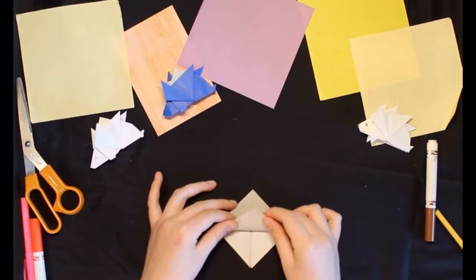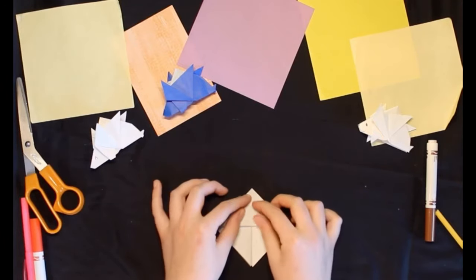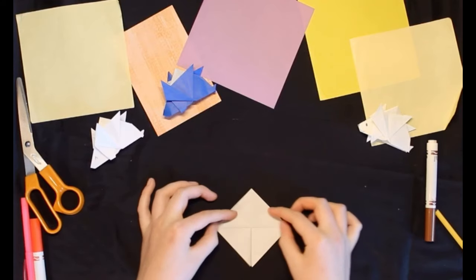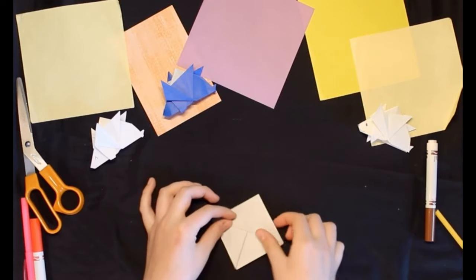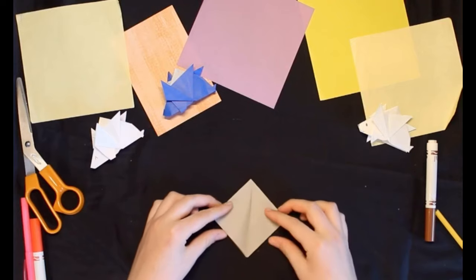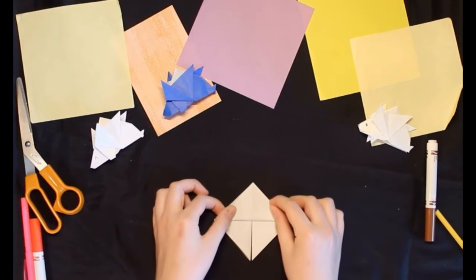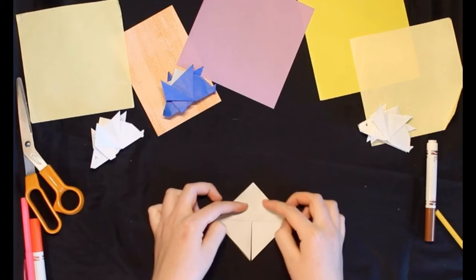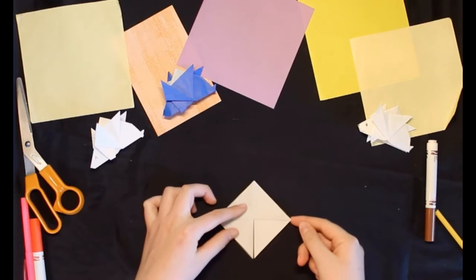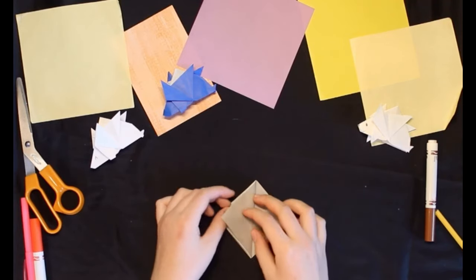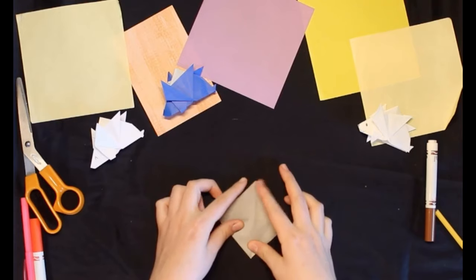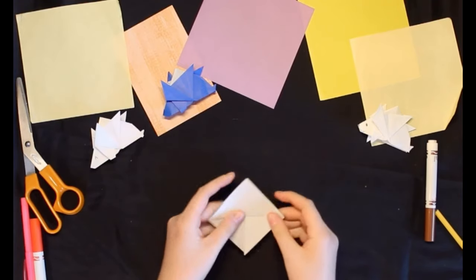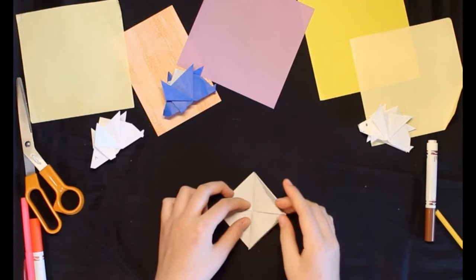Now, you're going to take the top flap from the bottom corner and bring it up to match with the top. And then flip her on over and do the same thing on the other side. Now, like a book, you're going to bring this top flap of that one over to the other side. There you go. Flipping over and do it again. Like a book over to the other side.